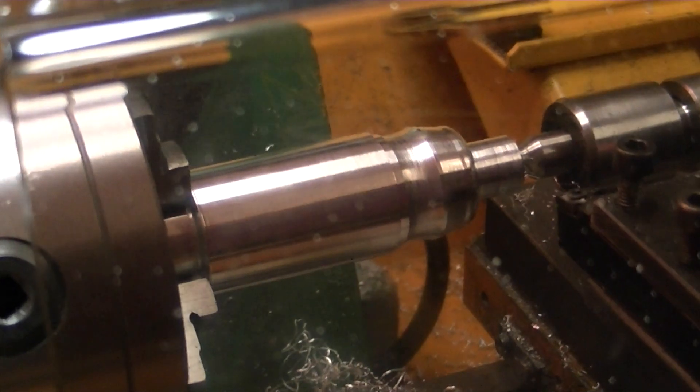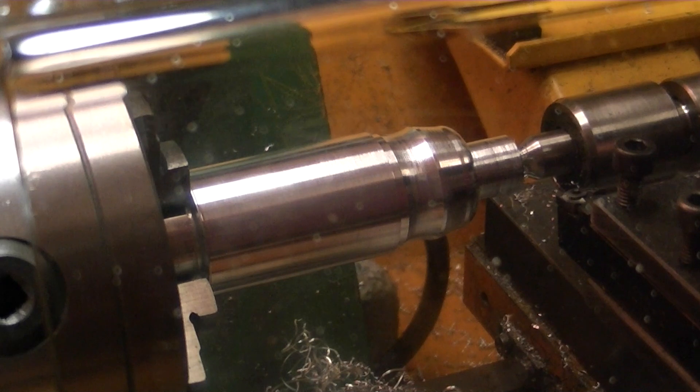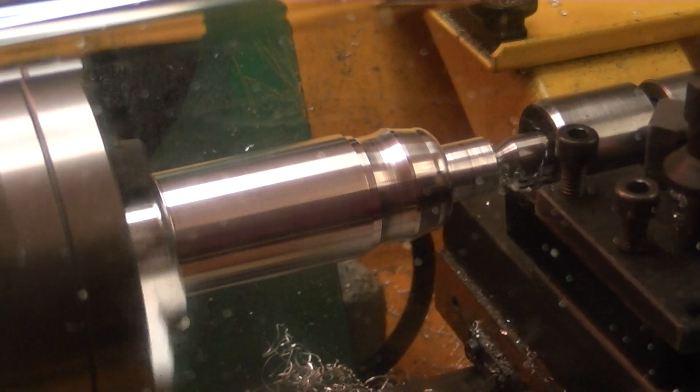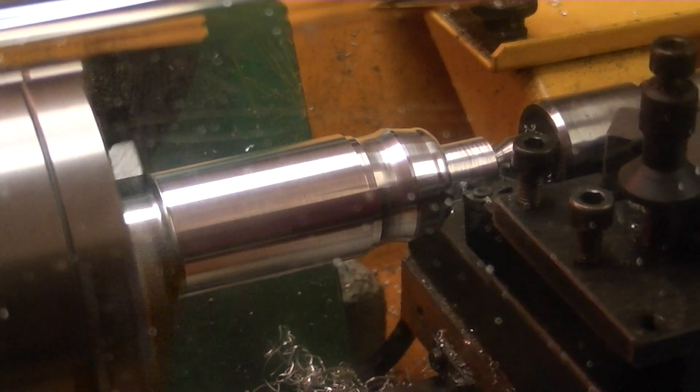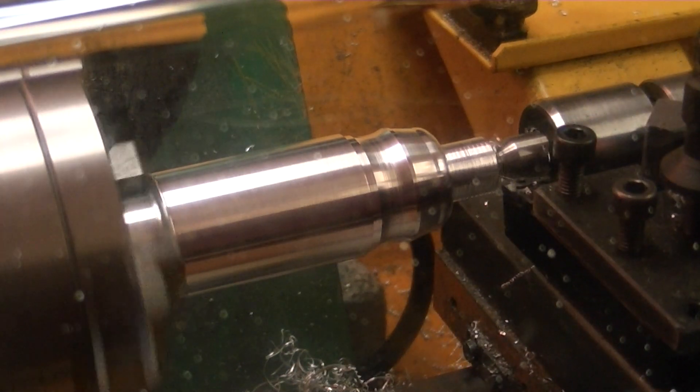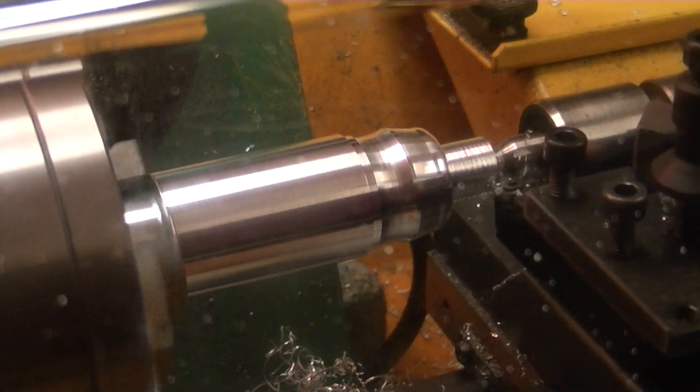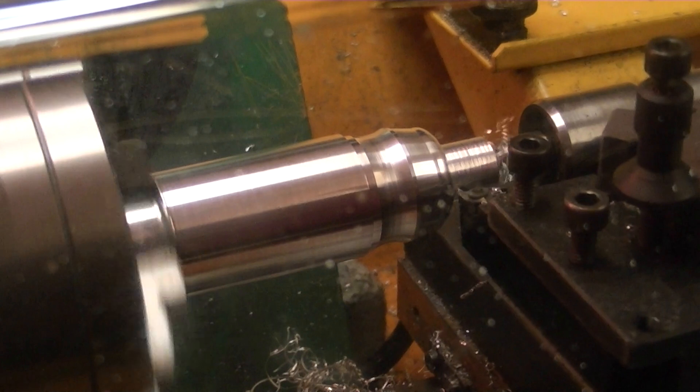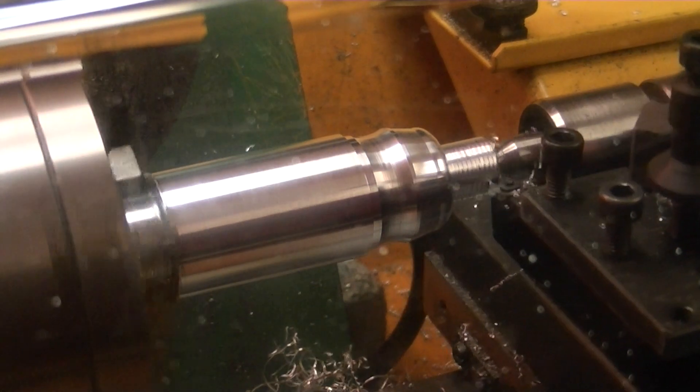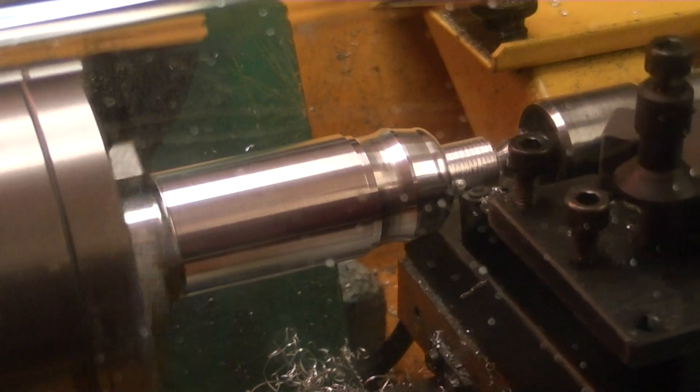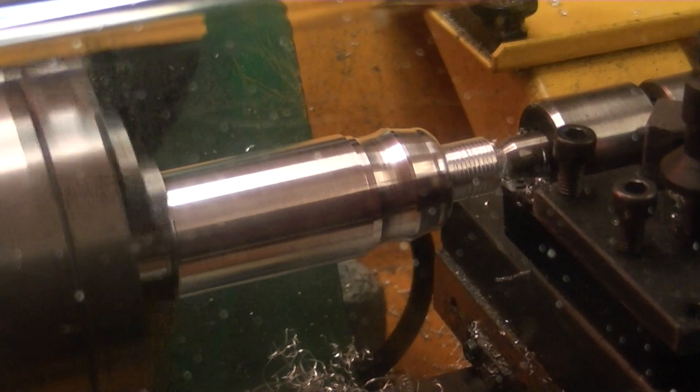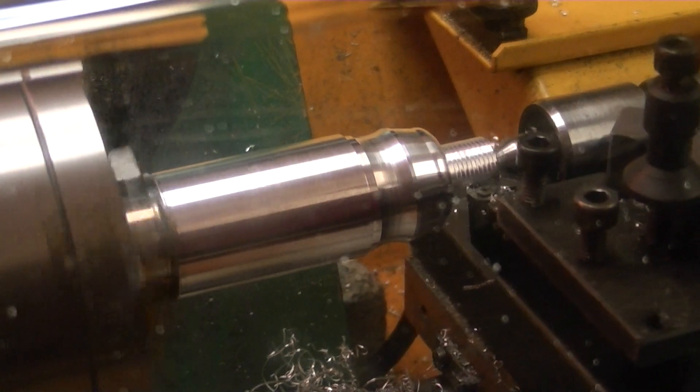All I have to do then is press the start button again to continue with the program. This is a 1mm pitch thread and it's being cut at 450 RPM. The depth of cut is 0.03 of a millimeter. The total depth of cut is going to be 0.60, so it's going to do 20 passes to cut the thread to the depth of 0.6.